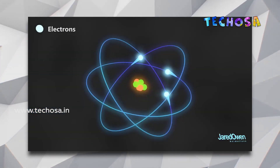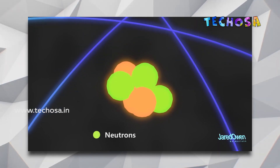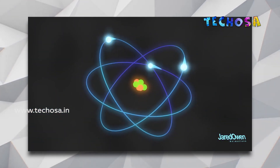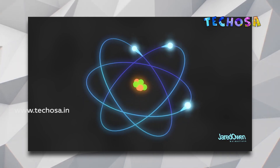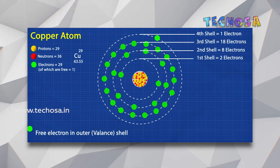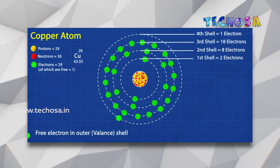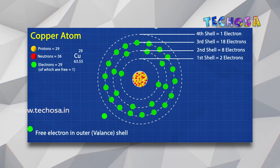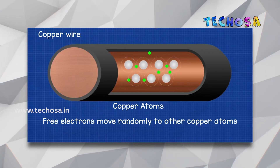Electrons are negatively charged and they are attracted to the positively charged protons. Electrons orbit around the nucleus in these orbits and each orbit can carry a number of electrons. The number of protons, electrons, and neutrons in an atom tells us which material it is. These electrons can move freely around other atoms and are called free electrons. Materials that have free electrons can pass electricity through them. Most metals like iron, copper, etc. can pass electricity through them.